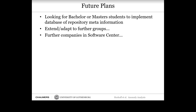We're also very interested in extending and adapting this to further groups. We have plans in the winter or spring to do this with further groups in Ericsson, and we're interested in applying these to other companies within the software center. It would be really interesting to see how much the general models change between companies — can we come up with a general data anomaly model across companies, or are each company's data anomalies too specific to require very customized models? Either way, the methodology could be quite useful.